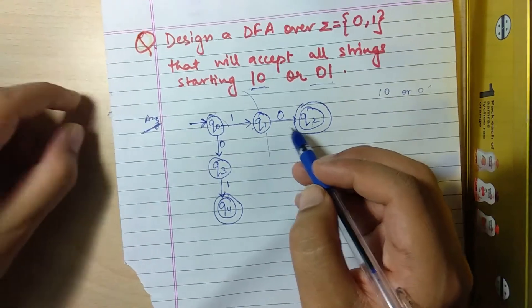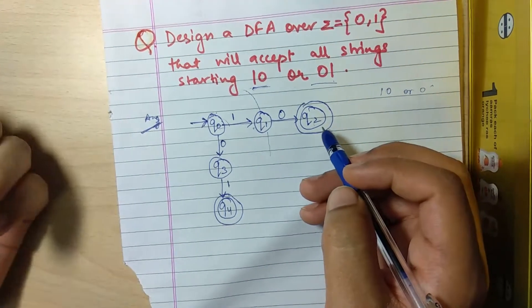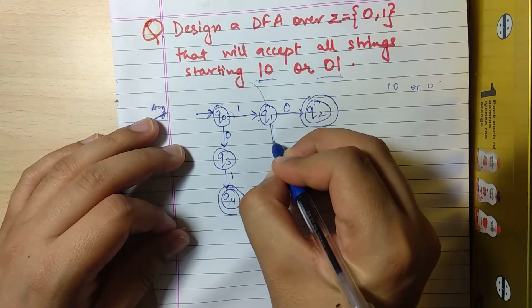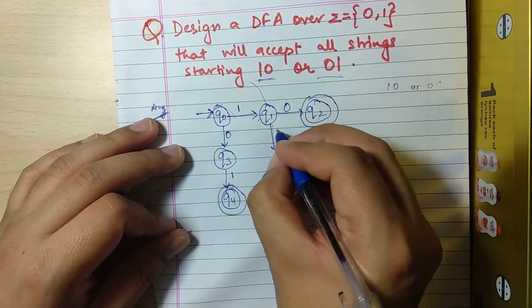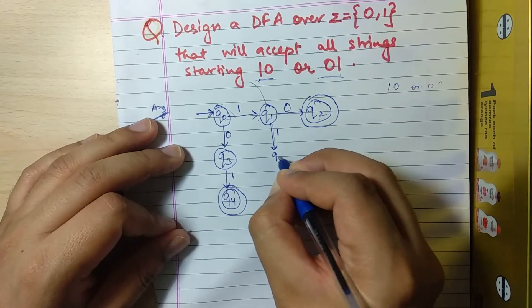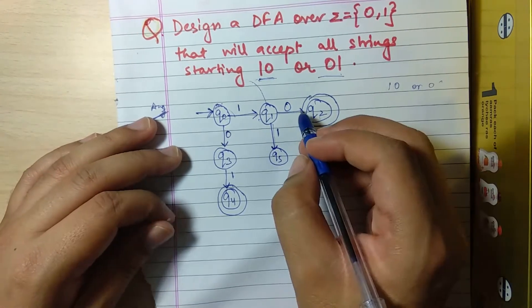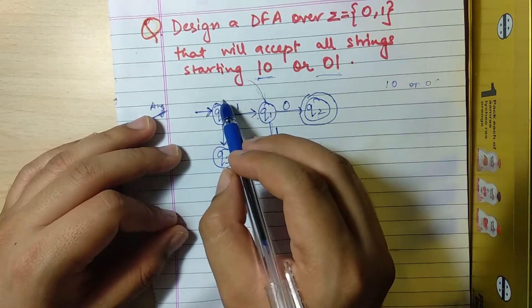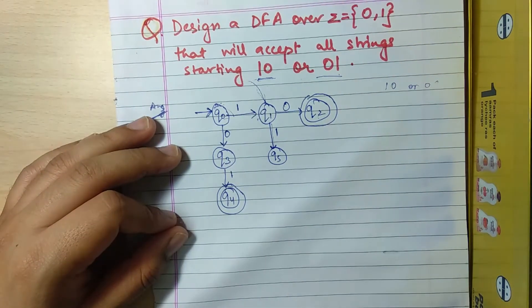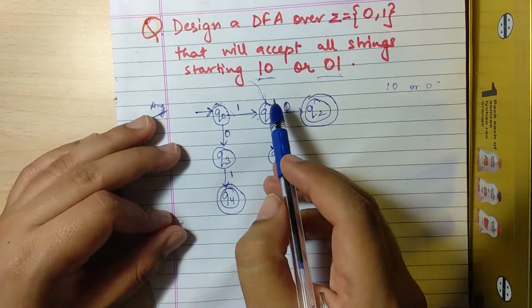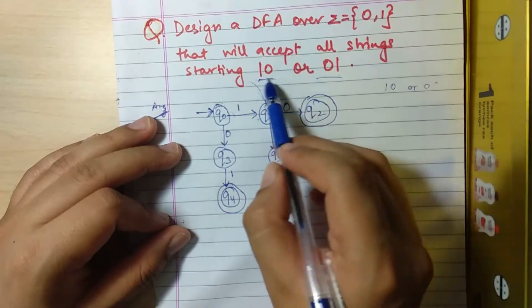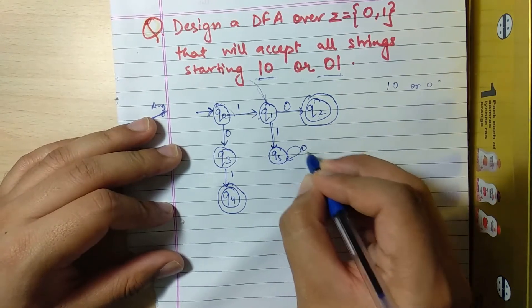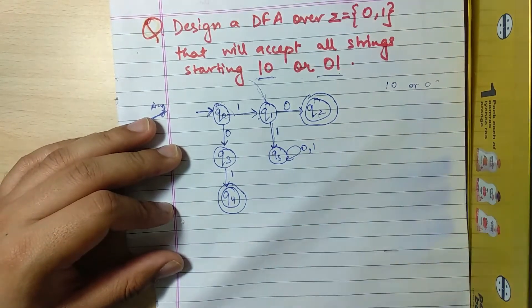For q1: if it encounters '0', it will go to q2. But if it encounters '1', we send it to a dead state — because if we don't, and we repeat it or send it back, it will be a problematic situation as it won't satisfy our criteria. This is how a dead state is denoted.